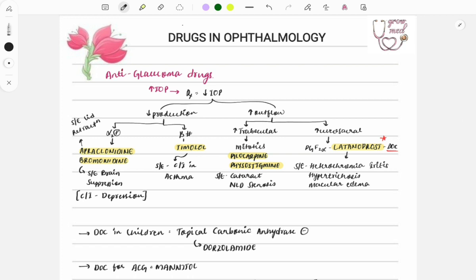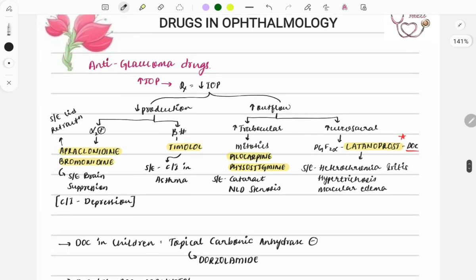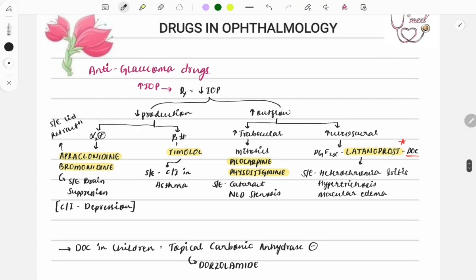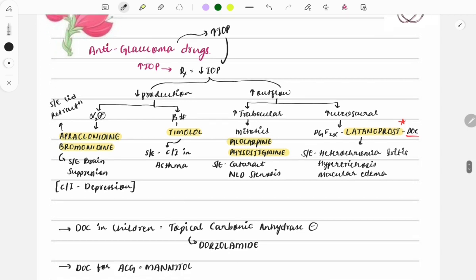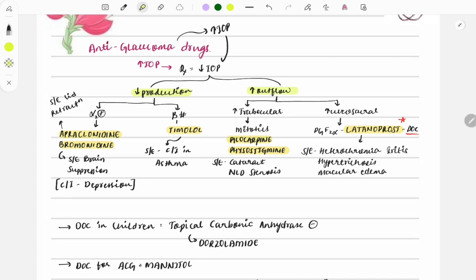Let's start with the anti-glaucoma drugs, which are also asked in integration with pharmacology. In glaucoma, the main issue is raised intraocular pressure. Our treatment aims to reduce IOP by two main methods: first, decrease the production of aqueous humor, or second, increase the outflow of aqueous humor.